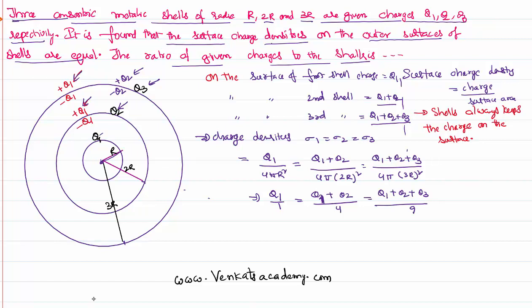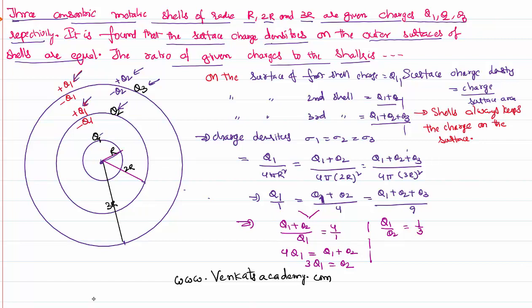From the first two terms: (q1 + q2)/q1 = 4/1. Cross-multiplying gives 4q1 = q1 + q2, so 3q1 = q2, meaning q1:q2 = 1:3. Similarly equating the other two expressions gives q3 = 5q1. Therefore the ratio of the charges on the three spherical shells is q1:q2:q3 = 1:3:5.